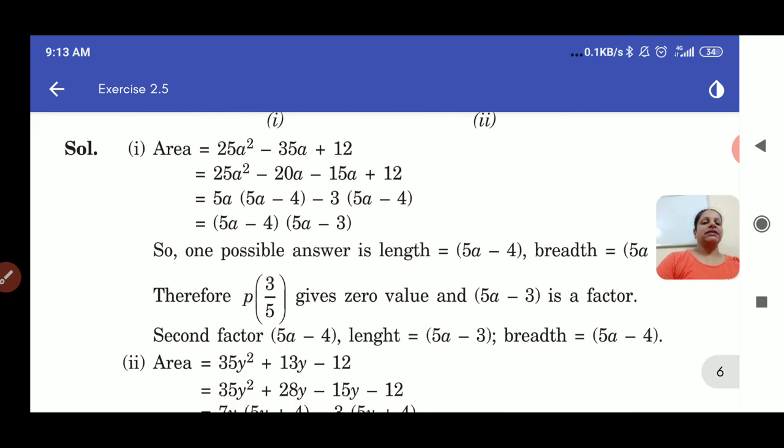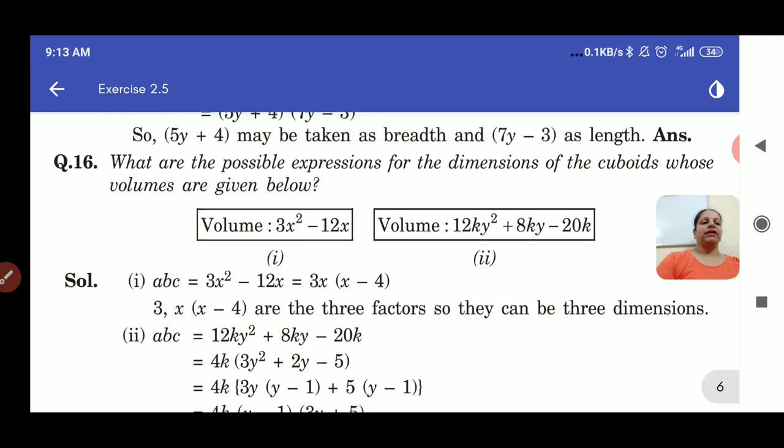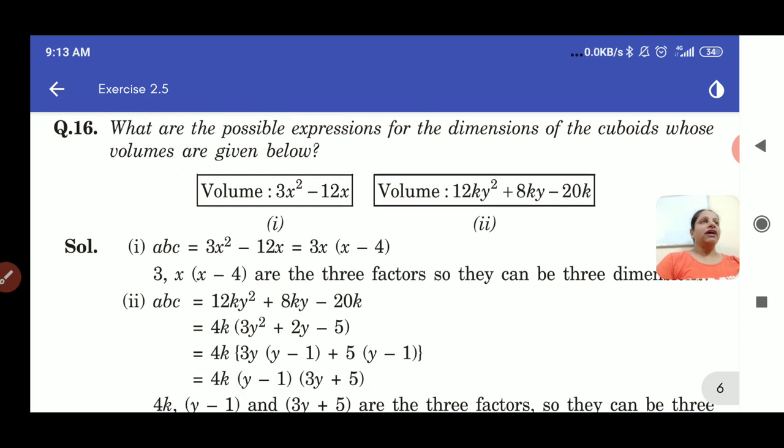Now we move on to question number 16. The 16th question is also same. But in this question what we have? We are given the volumes. And we know that volume is the product of three factors. And what are those three factors? Length into breadth into height. So let us take the second part in this case.